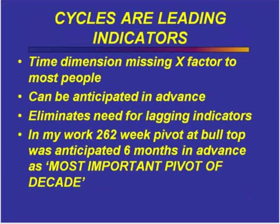As we begin, time work is a missing X factor to most people. Time windows can be anticipated in advance, but it is a double-edged sword. On the one hand, we know that a certain window is going to come and a market can turn, but we want to make sure that it does turn. If you get nothing else out of this presentation today, I don't want you to leave here thinking Jeff told me the market could turn at 144 or 233, and just go ahead and reverse. We want to see evidence that there is a turn. But this does eliminate the need for lagging indicators, and you can anticipate before you act in advance.